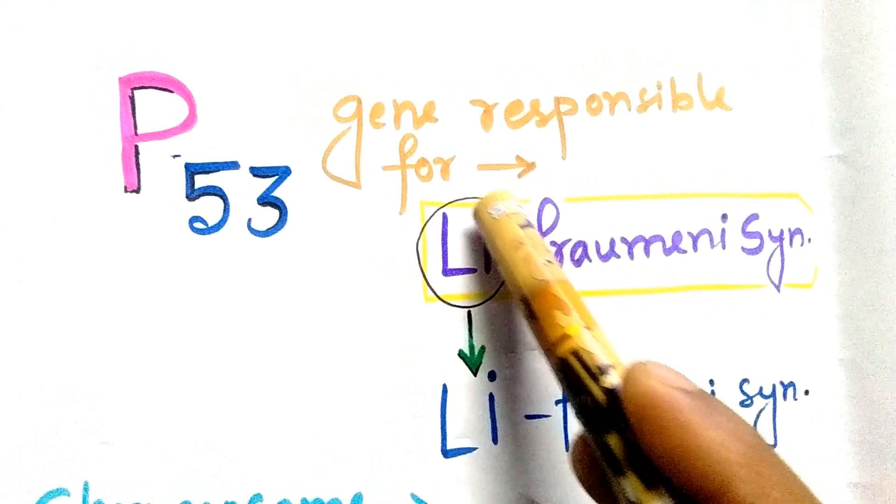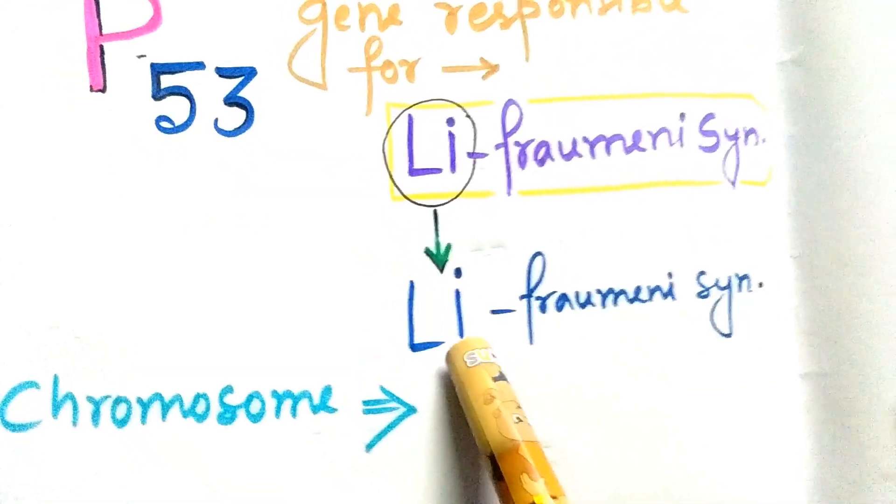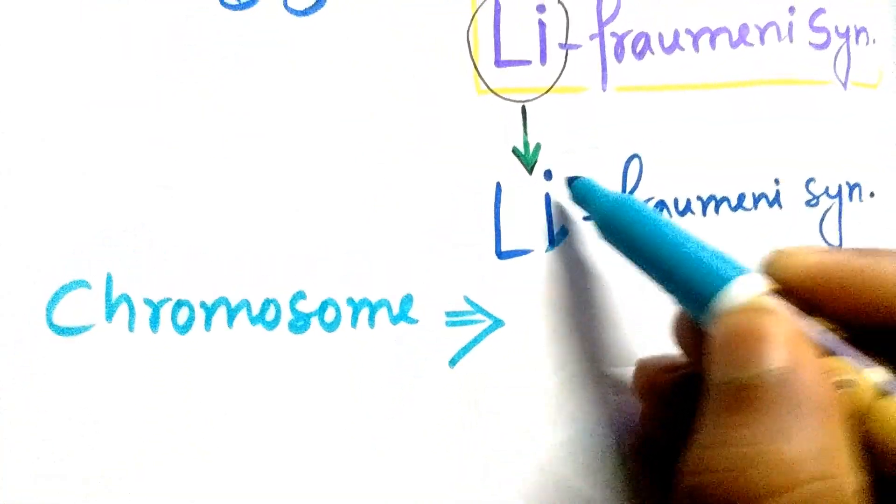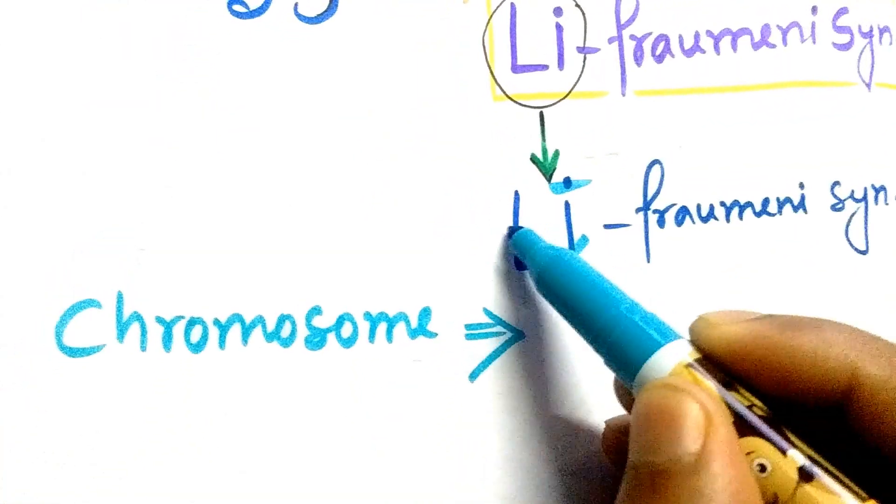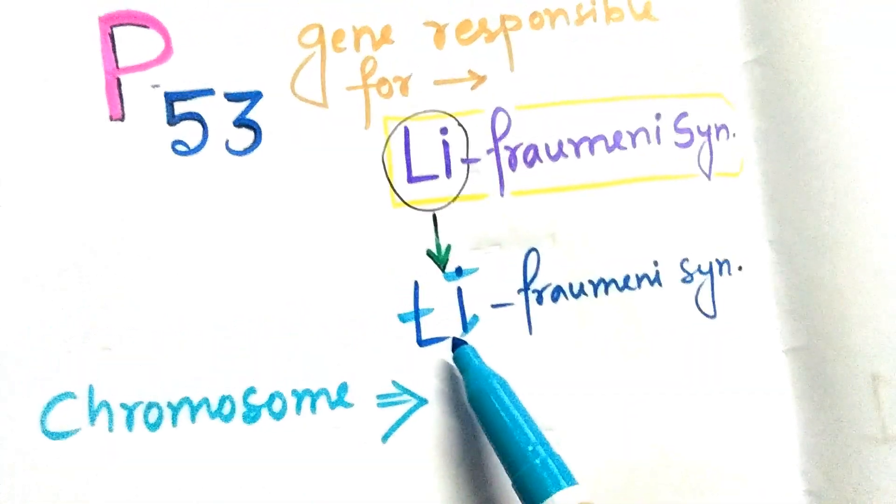From Lee, can you see the chromosome number? If you can't see, now you will be seeing that it is 17. You can see 17.